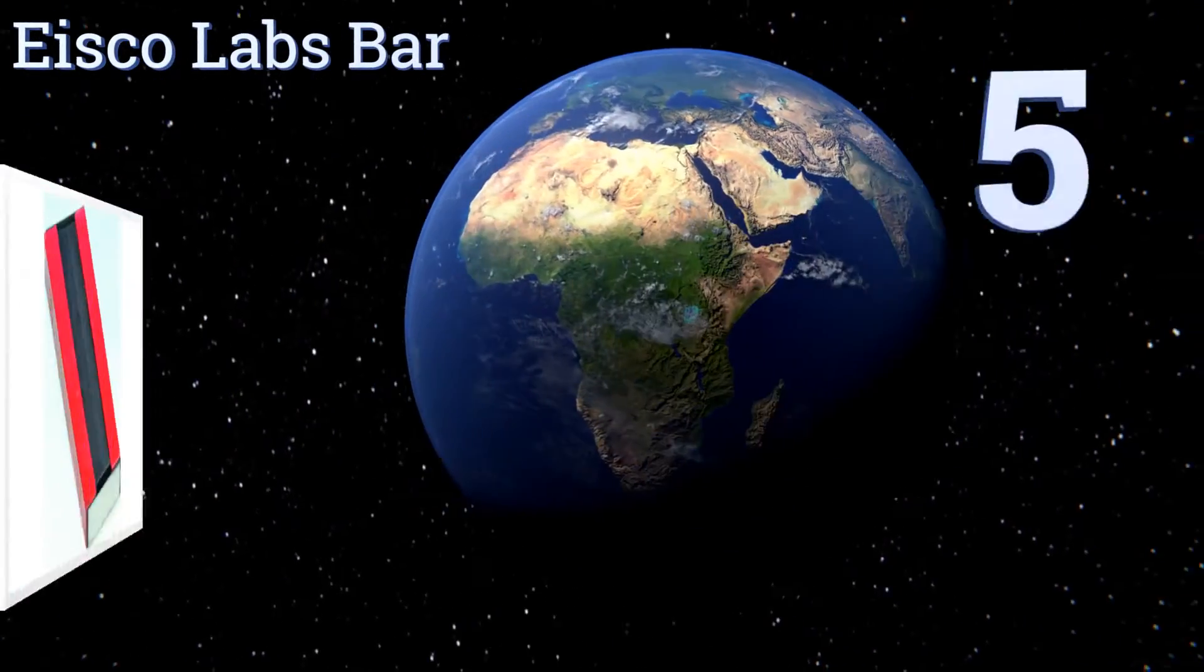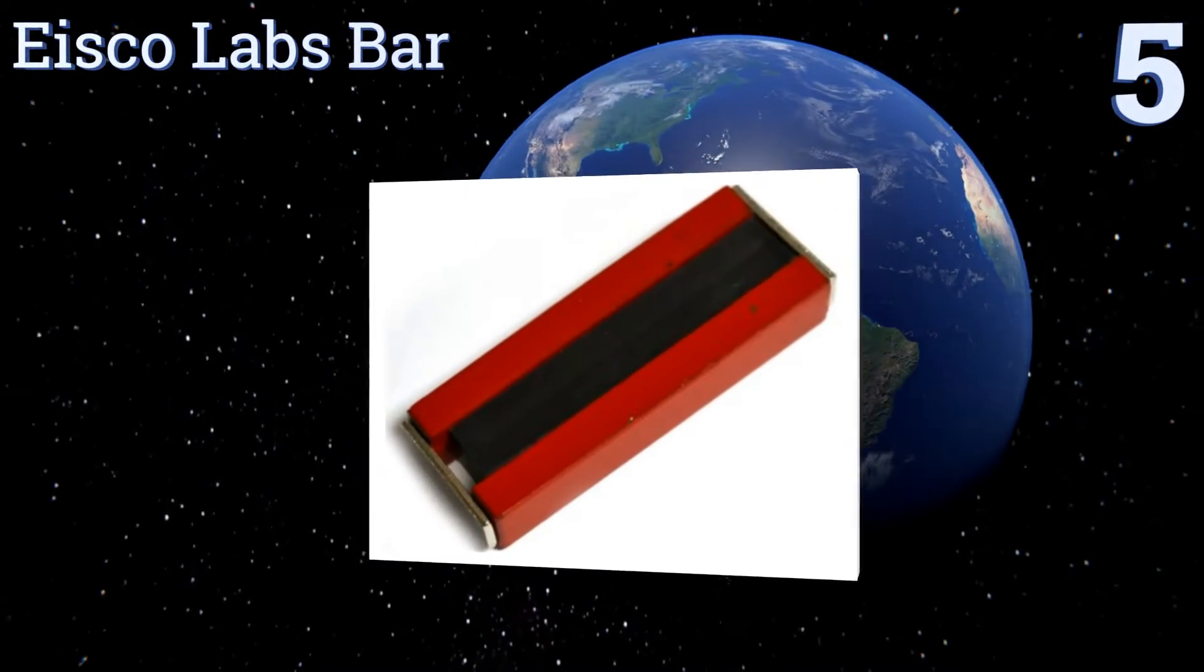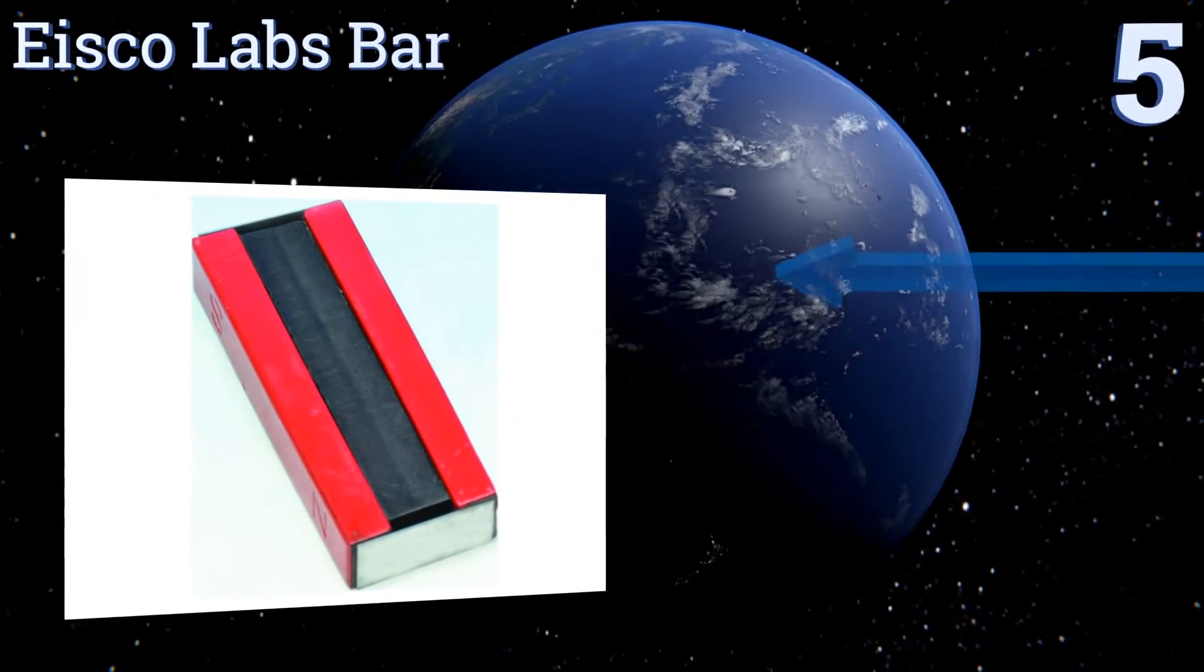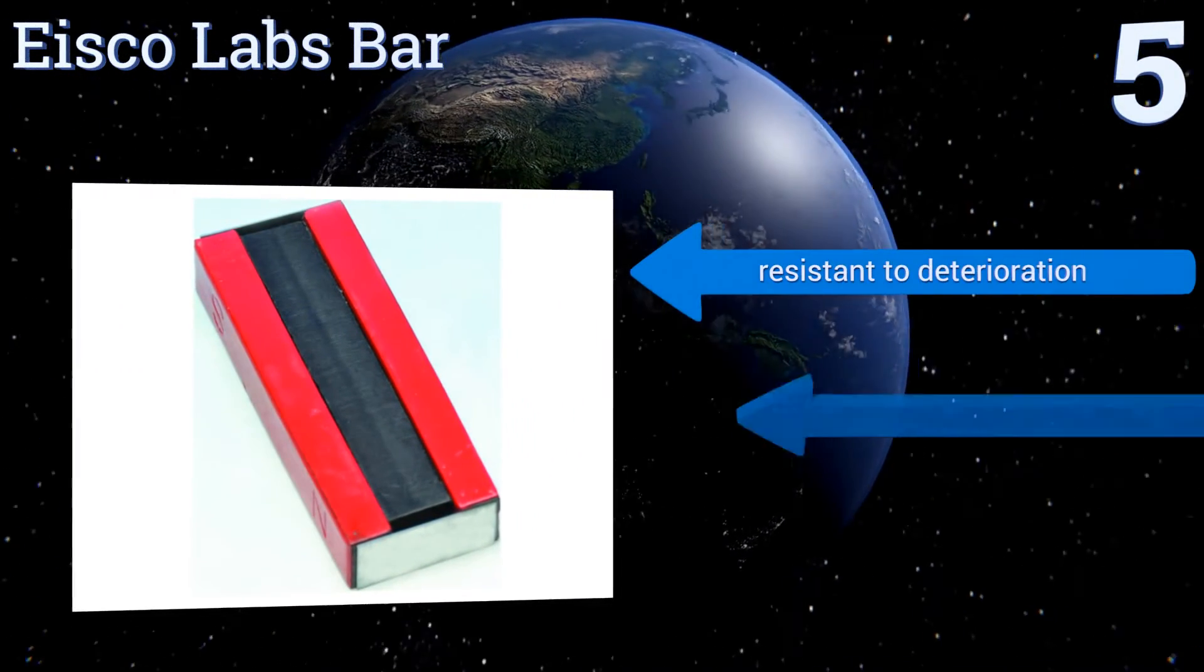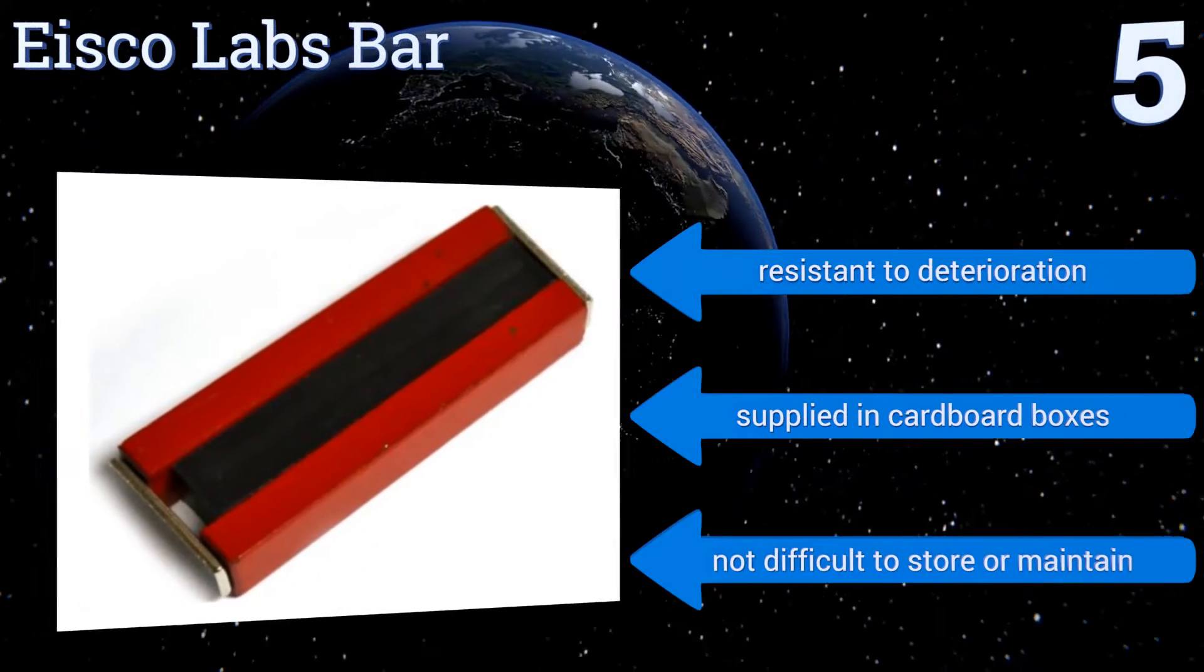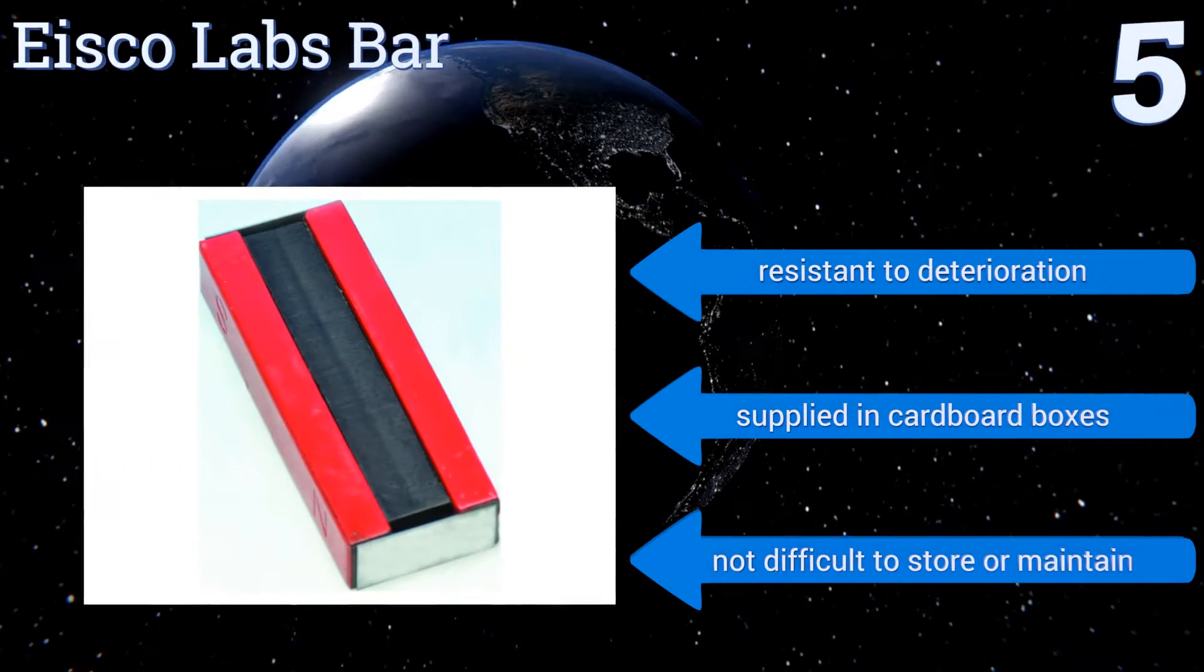At number 5, simple and functional, the Eisco Labs Bar comes in a pair and includes a spacer and a keeper as part of the package, which is useful for preserving your magnet strength. Each side of the bar is stamped to designate which pole it represents. They're resistant to deterioration and are supplied in cardboard boxes. They're neither difficult to store nor maintain.